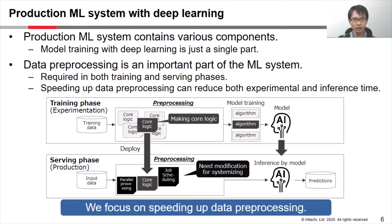Data preprocessing is required in both model training and serving phases. These figures show the data processing flow during training and serving phases. In the training phase, data scientists create a machine learning model and extract features from raw data.